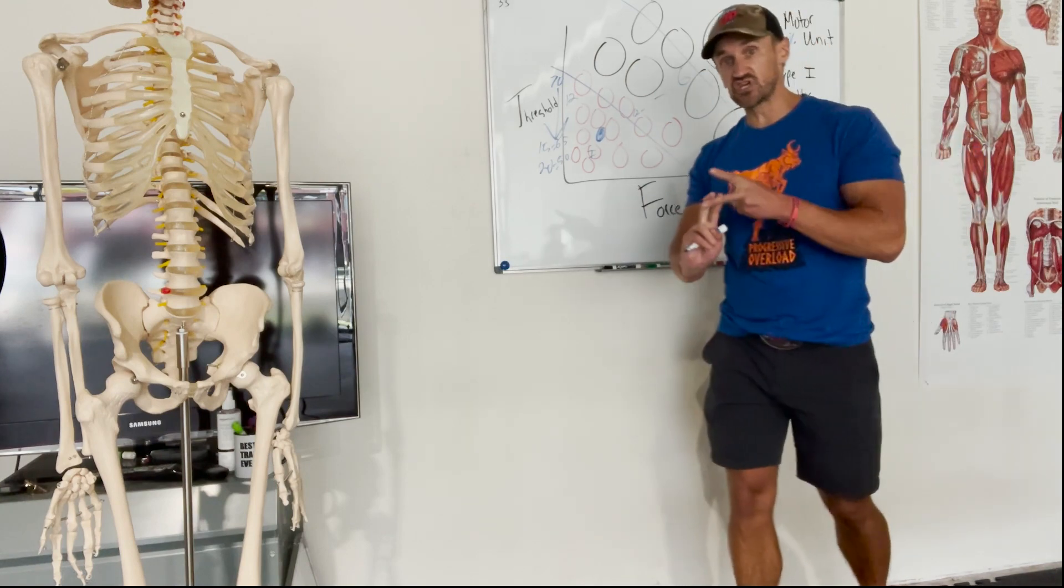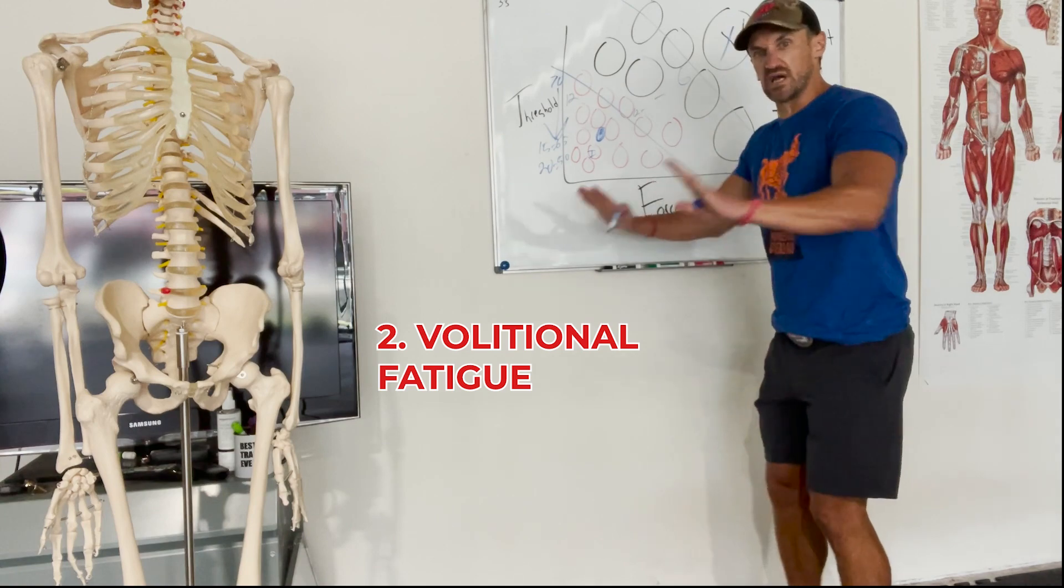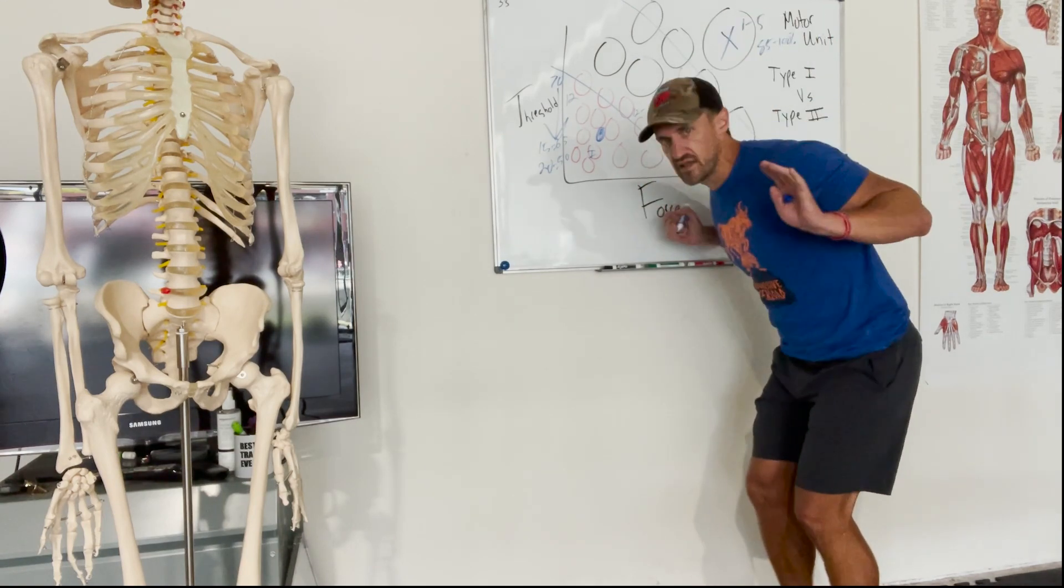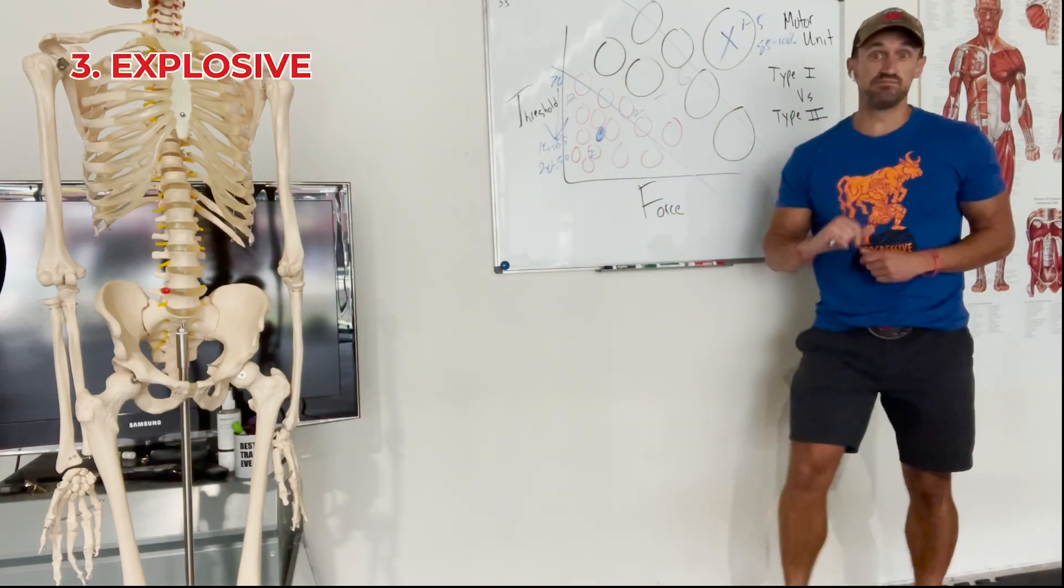Number two is volitional fatigue. So when I do something and I go into what I call a face bite. You're doing push-ups. You start getting tired. And you fall on your face. That's type 2 recruitment.